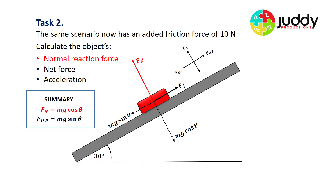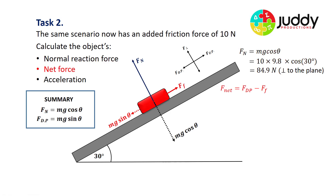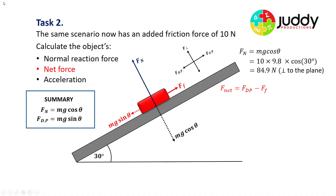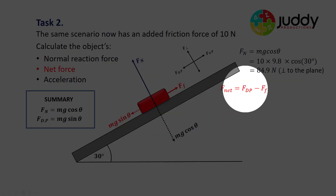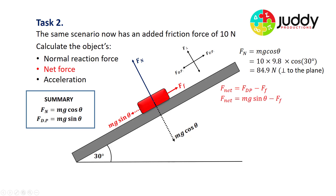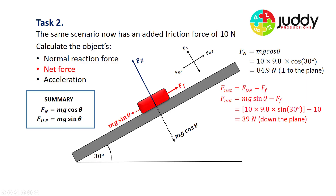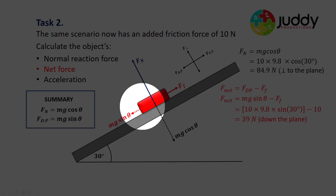The normal reaction force remains Fn equals Mg cos theta — exactly the same as before — giving 84.9 newtons perpendicular to the plane. For the net force, we must consider all forces parallel to the plane: Mg sin theta pulls down the plane, while friction opposes it going up the plane. Friction always acts opposite to the direction of motion. So net force equals Mg sin theta minus friction: (10 × 9.8 × sin 30°) − 10 = 49 − 10 = 39 newtons down the plane.